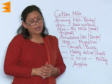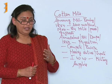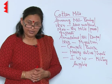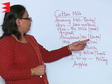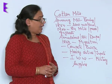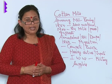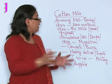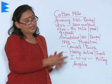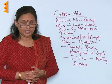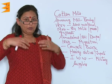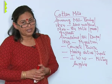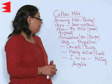Besides Bombay, other places also saw the emergence of mills in India, like Ahmedabad in 1861 and Kanpur in 1862. During this time, a lot of people migrated from smaller places to these industrial centres where the spinning or cotton mills were established, as they were looking for employment since the traditional handicraft industry had totally declined by this time.